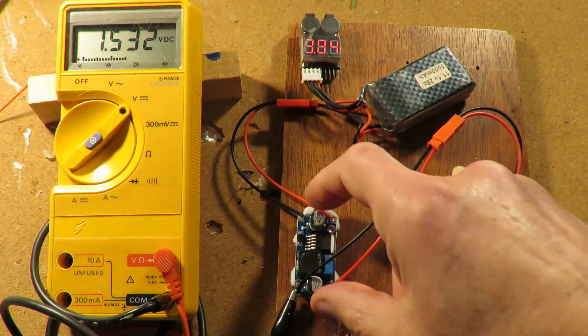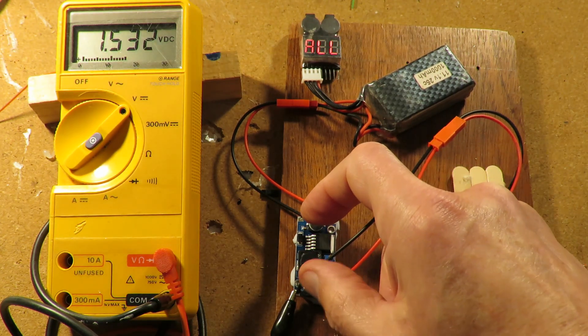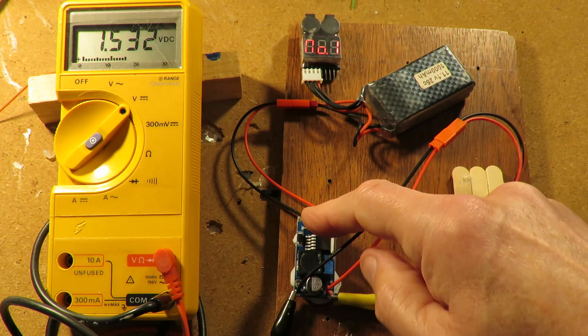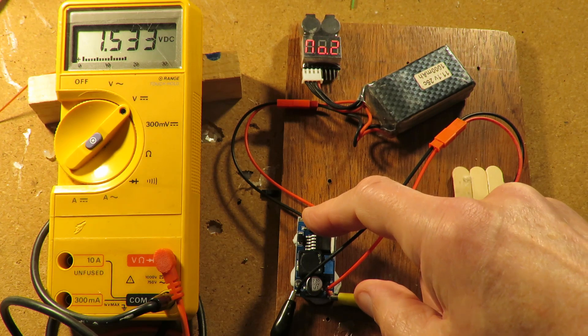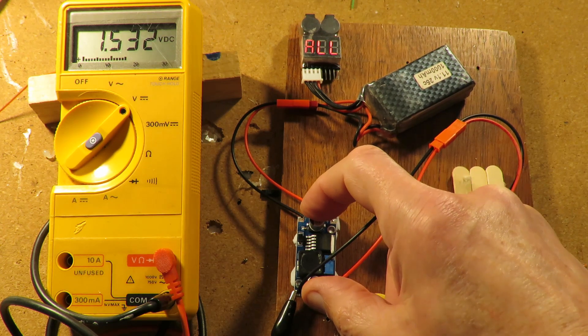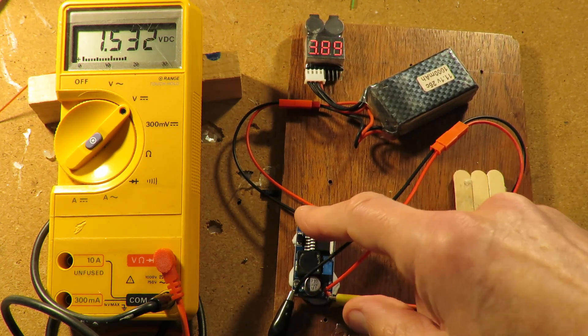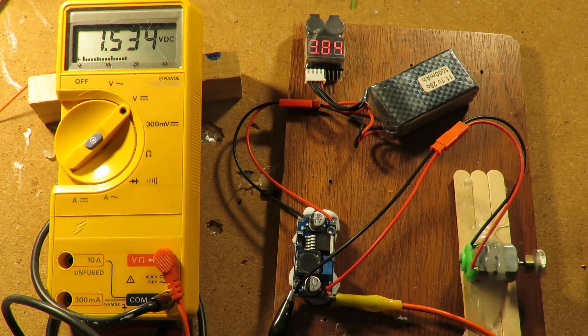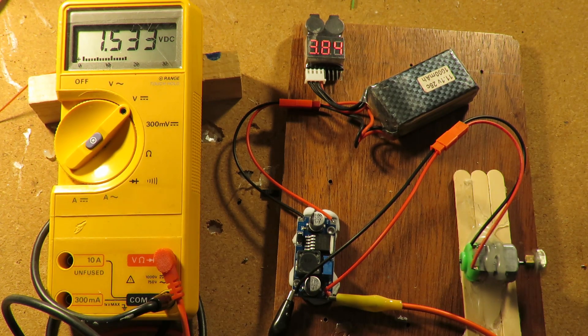These little buck converters, you can buy them online. I got these from eBay. I think I bought a bag full of them because they were so cheap. I've had a look just now and they're sort of £1.99 or something like that, or maybe even cheaper.